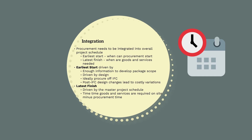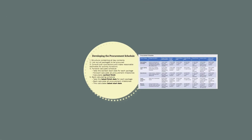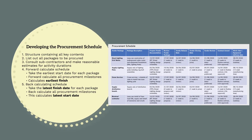The late finish date for procurement will be driven by the master project schedule. This will be when the goods and services being procured are required to be ready on site to meet the overall project schedule. To develop the procurement schedule, we first need to list out all the key procurement activities — the steps in the procurement process for which we need to identify a date and duration. This will be the structure of the procurement schedule.